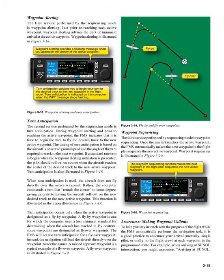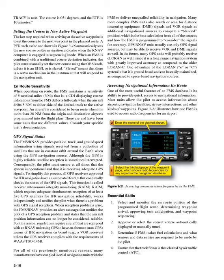For example, when arriving at Sunol intersection, you might announce: arriving at Sunol. Tracy is next. The course is 051 degrees, and the ETA is 10 minutes. Setting the course to the new active waypoint: the last step required when arriving at the active waypoint is to set the course to the next waypoint in the planned route. A PFD automatically sets the new course on the navigation indicator when the RNAV computer is engaged in sequencing mode. When an FMS is combined with a traditional course deviation indicator, the pilot must manually set the new course using the OBS knob, unless it is slaved. Slaved means that there is a servo mechanism in the instrument that will respond to the navigation unit.